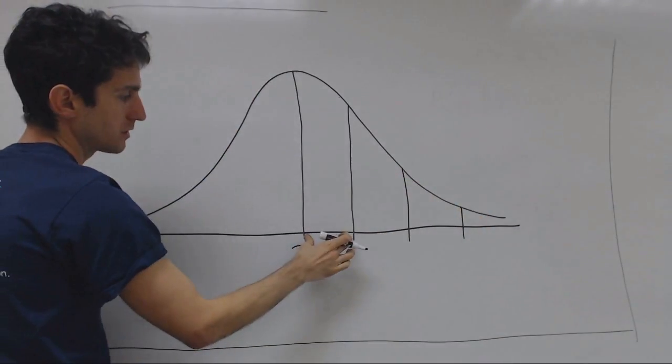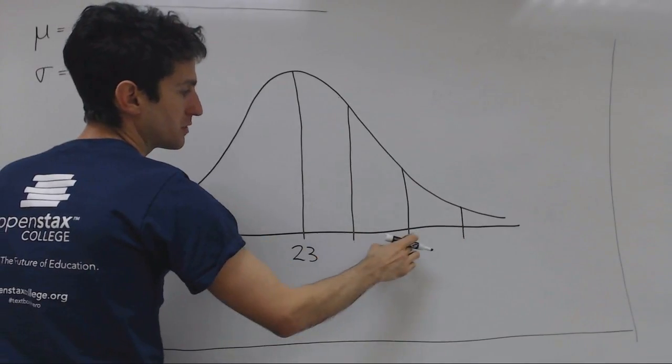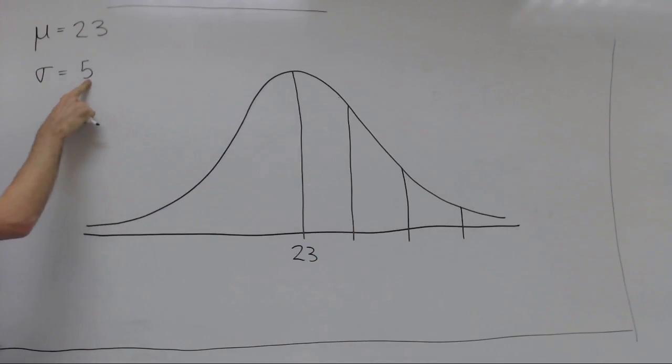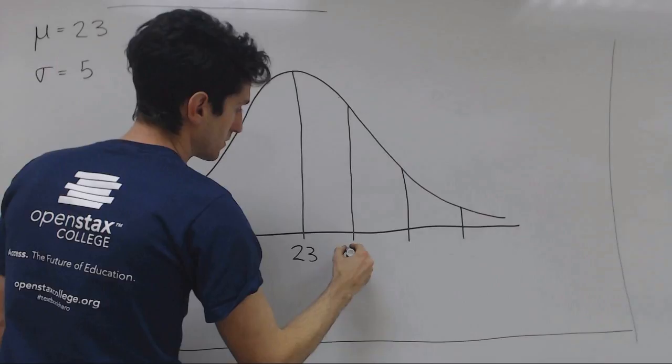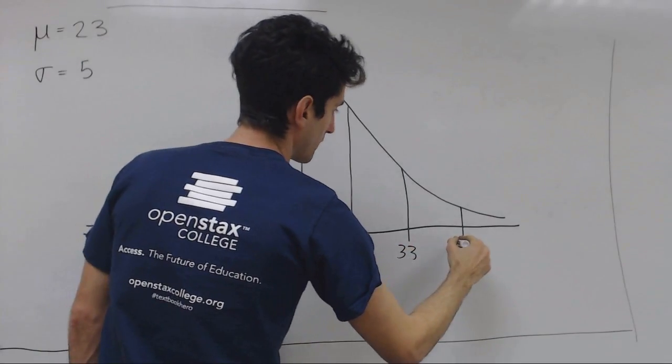The distance between these horizontally is the standard deviation. So we can label these new points by adding the standard deviation to the mean. 23 plus 5 is 28. 28 plus 5 is 33. 33 plus 5 is 38.